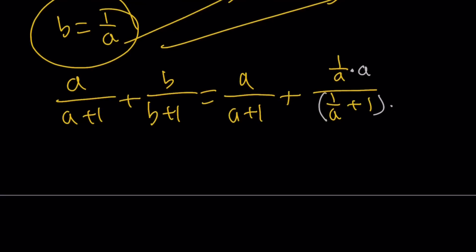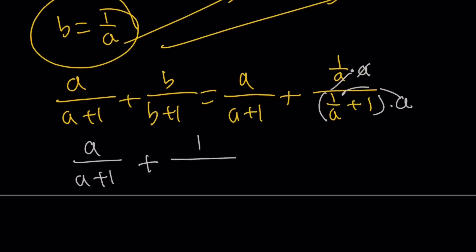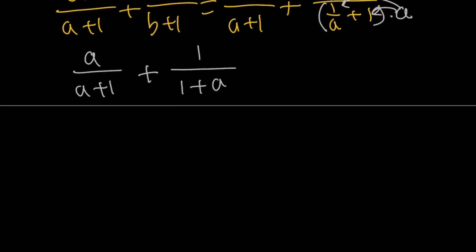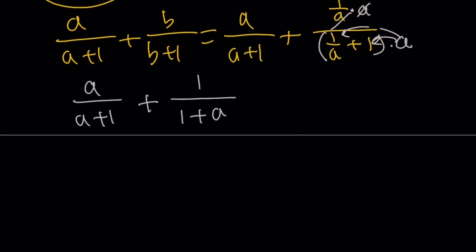Let's distribute. The first term stays the same: a over a plus 1. In the second term, after multiplying by a, the a in the numerator cancels with the a in 1 over a, leaving 1. The denominator becomes 1 plus a — same as a plus 1. So now both fractions share the denominator a plus 1, and we can write the sum as a plus 1 over a plus 1, which equals 1. Same result as before.